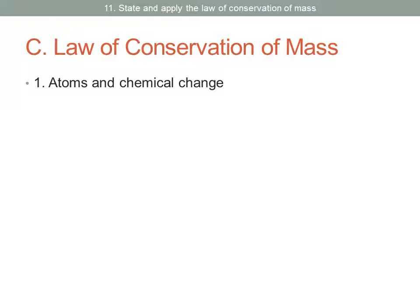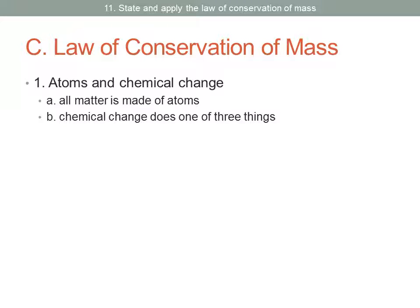The Law of Conservation of Mass is about atoms and chemical change. It basically tells us that all matter is made of atoms, and that chemical change involves one of three things. Atoms are either combined, they're separated, or they're rearranged. There's only three things that can happen.